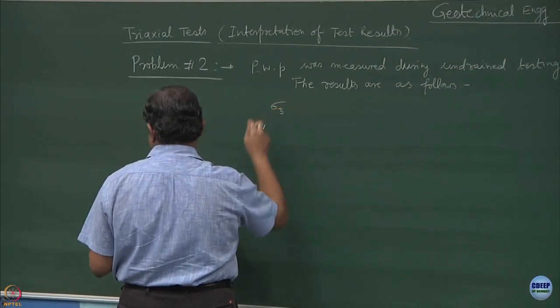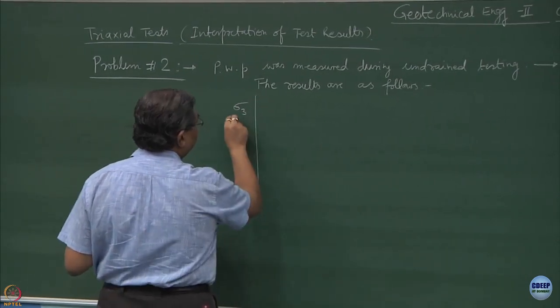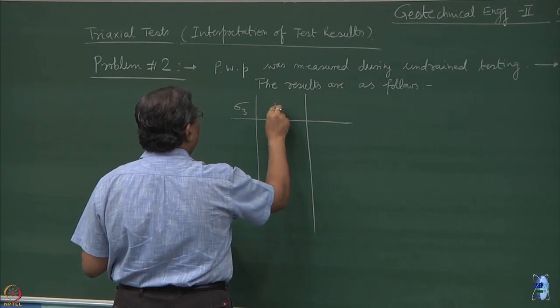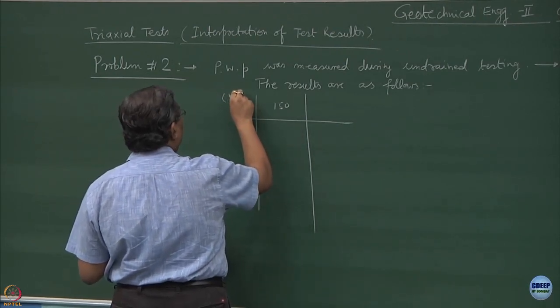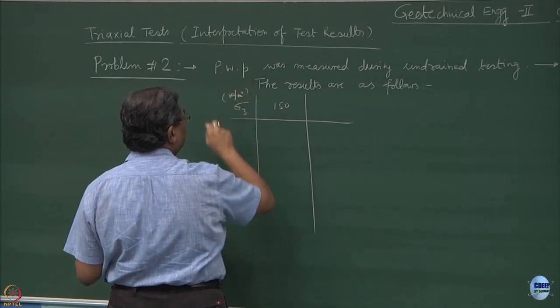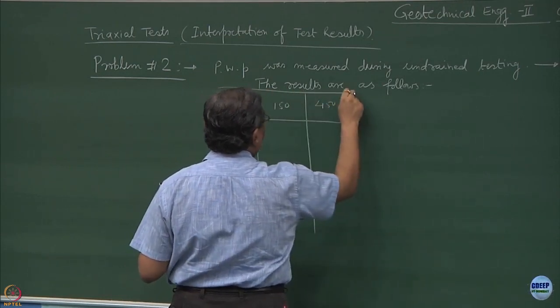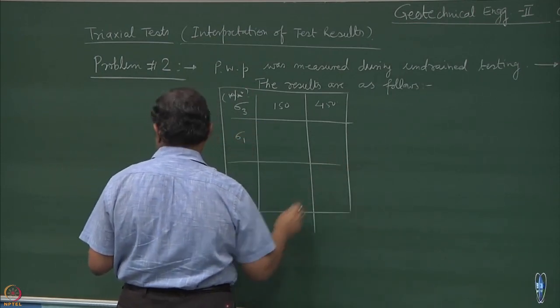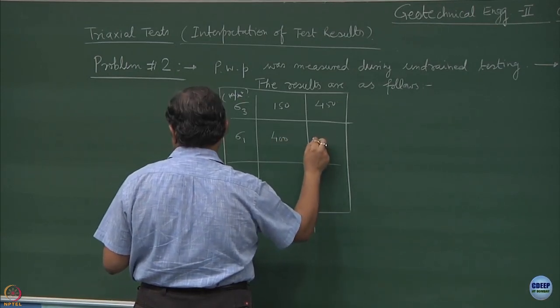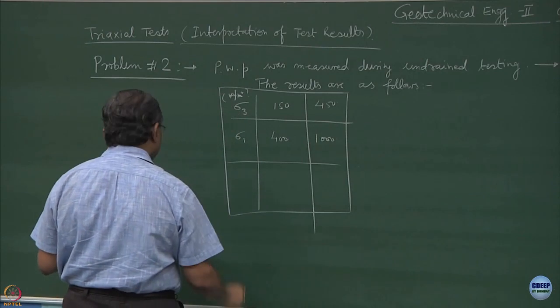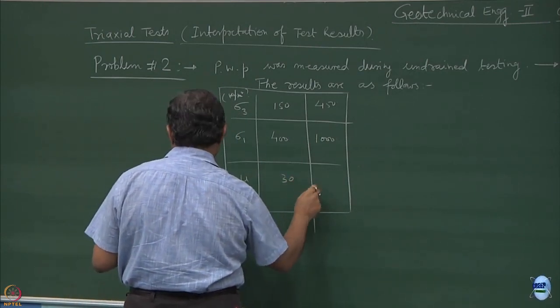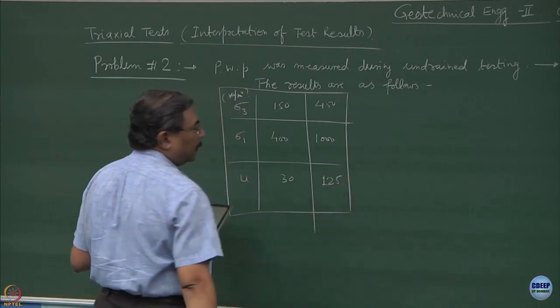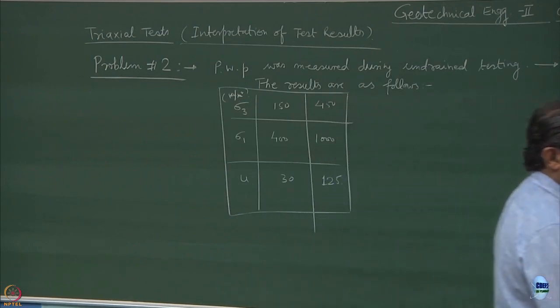You bring that soil, crush it, make it to a certain particle size, compact it. At every stage the process requires huge amount of money. So this becomes a game of money. Now, these are the results: you have sigma 3, two samples were tested, 450 and 150.